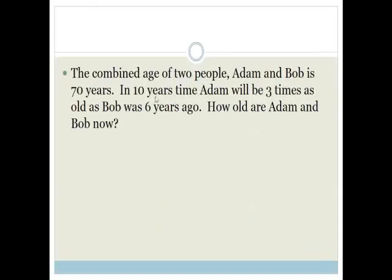we're going to be looking at the combined age of two people, Adam and Bob, is 70 years. So let's let Adam's age be X, and Bob's age be 70 minus X.